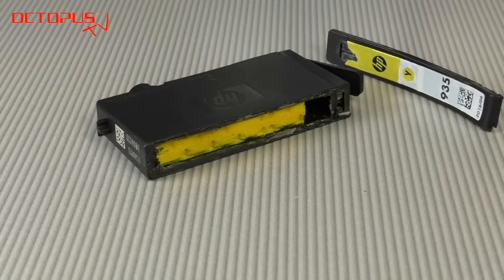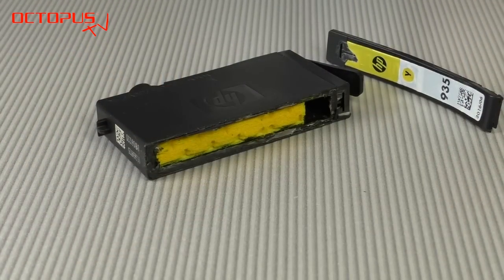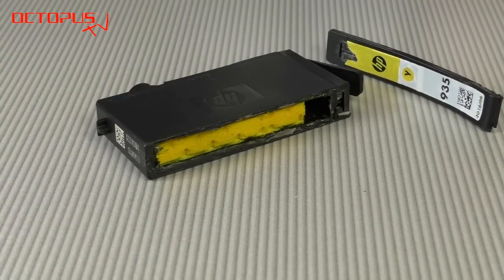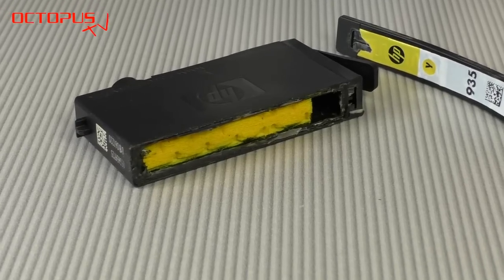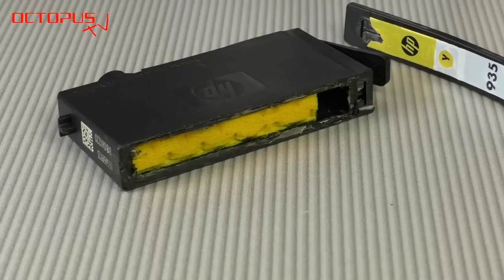The reason why we have chosen the dripping method is the sponge material that is used in these cartridges. The sponge material used in HP 934 and HP 935 cartridges is very dense.